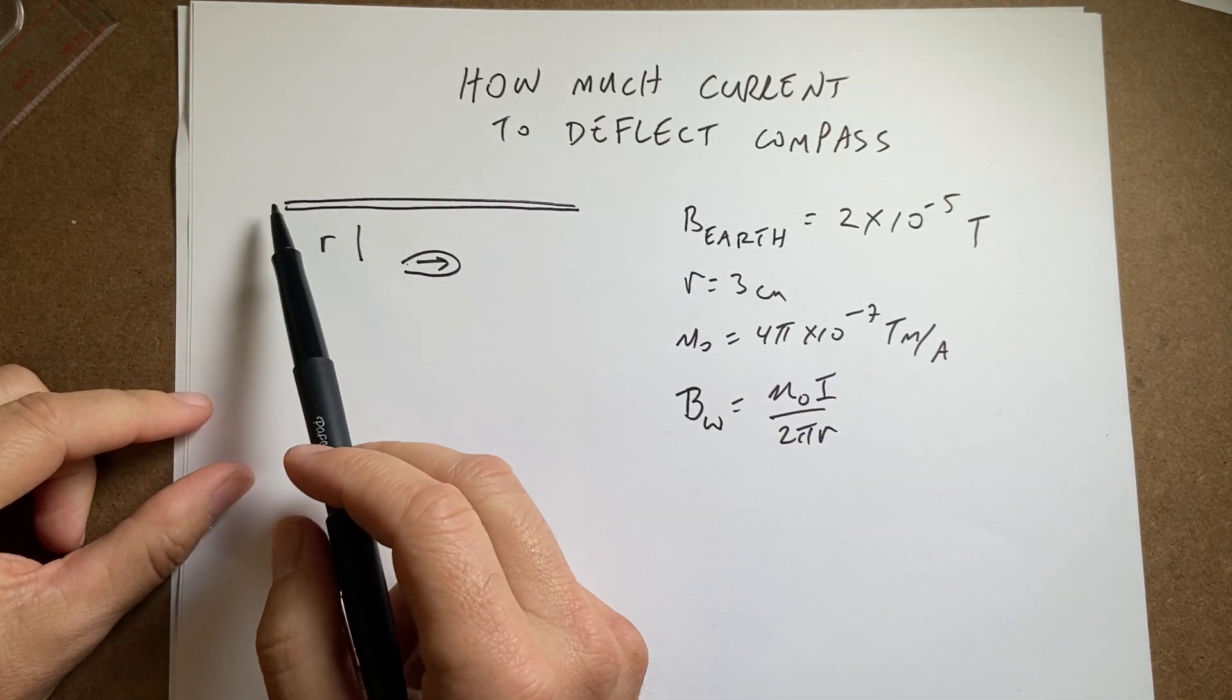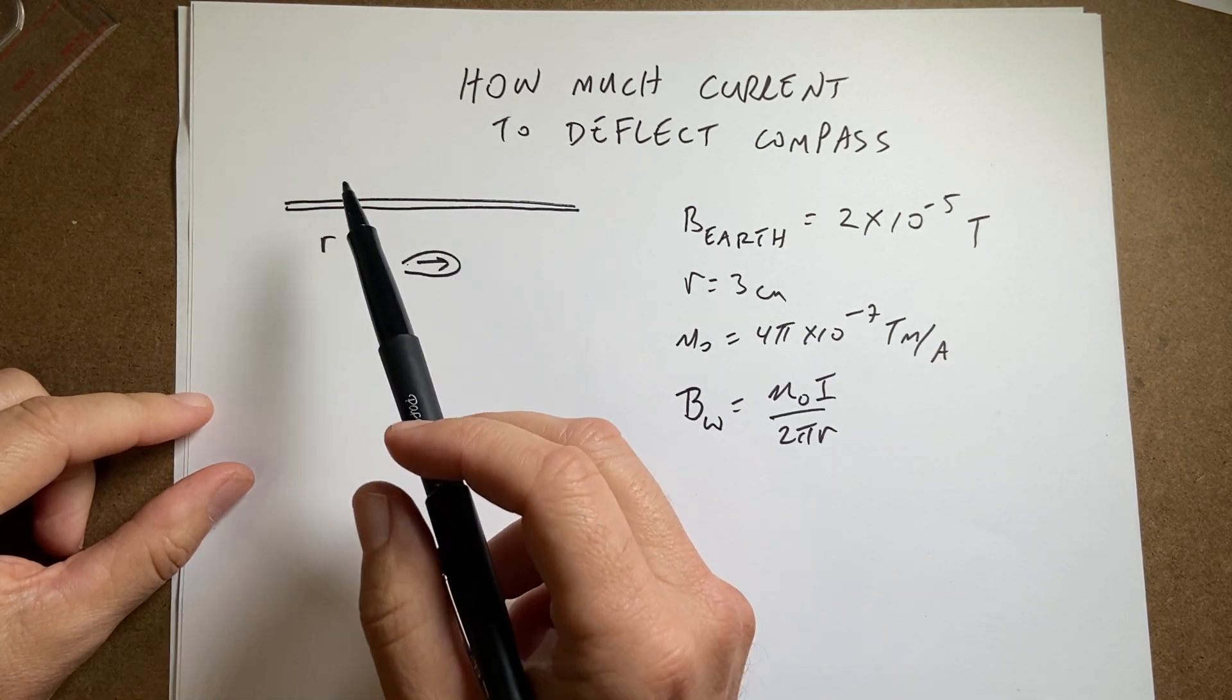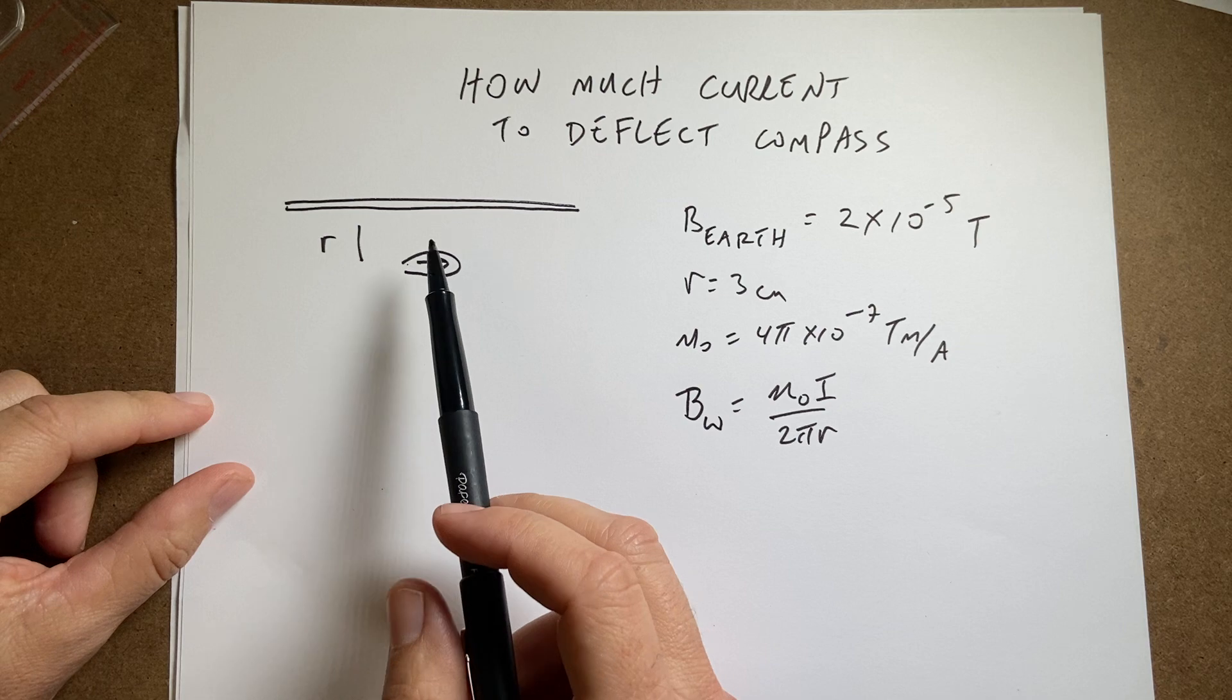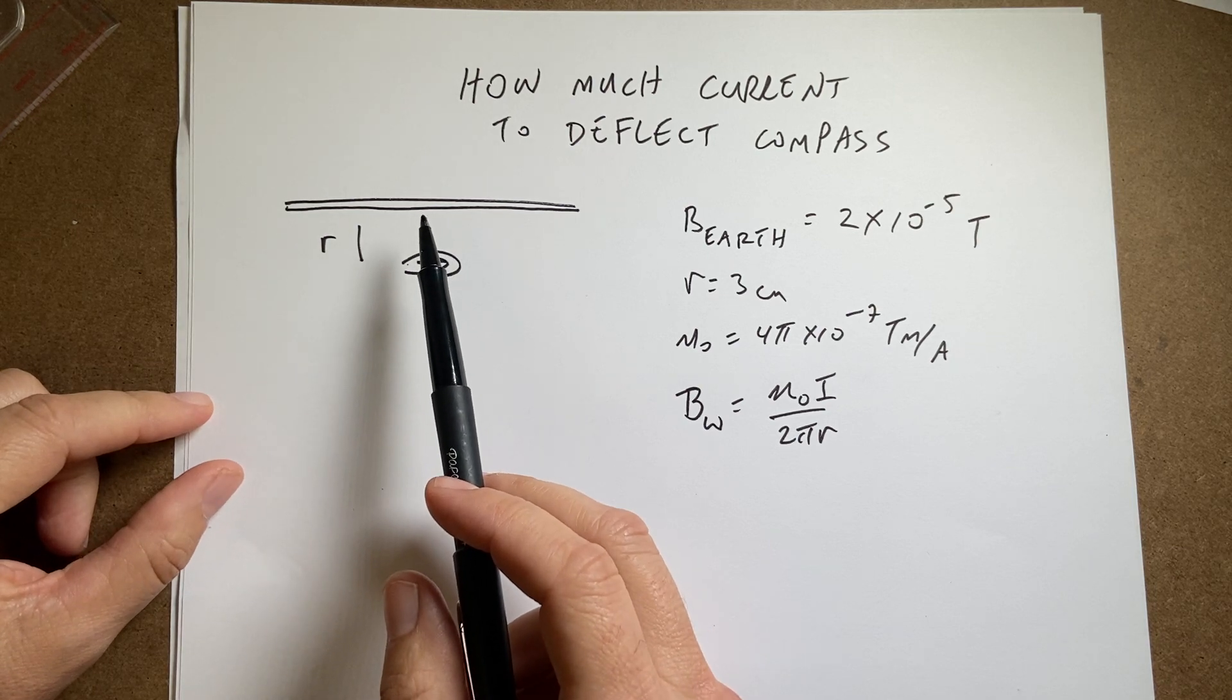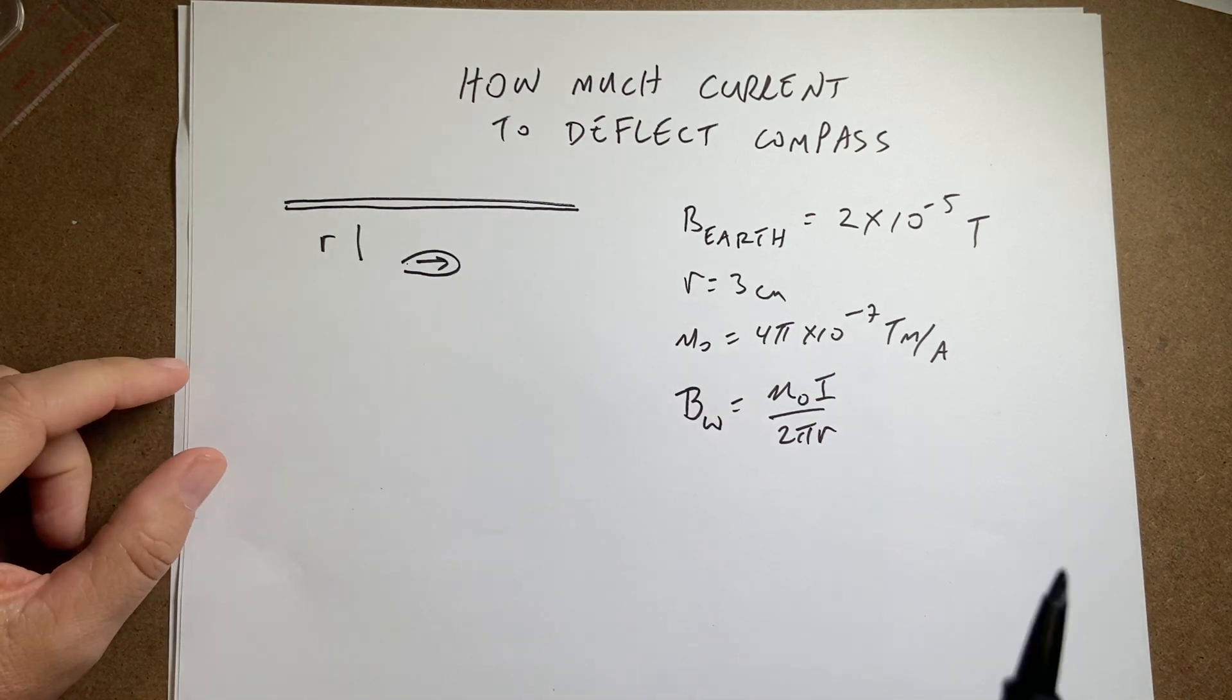Okay, so here's the problem. I have a wire and it can have a current in it and it's over a compass. It's three centimeters over a magnetic compass. And the question is how much current would you need to run through this wire so that the compass deflects 40 degrees.